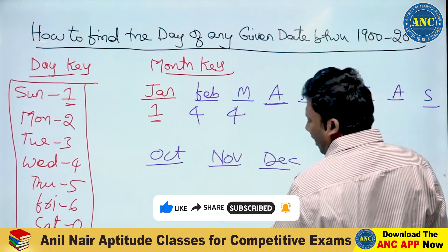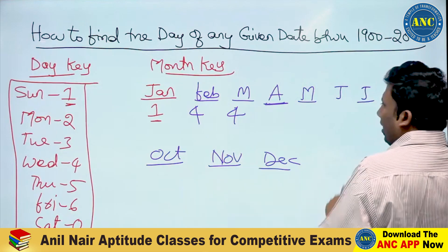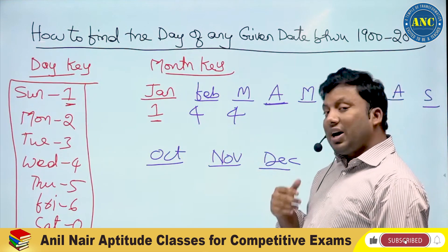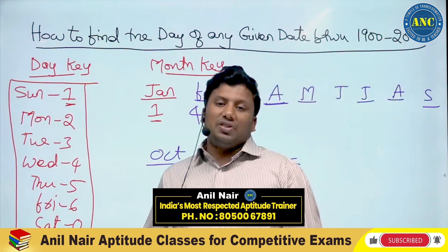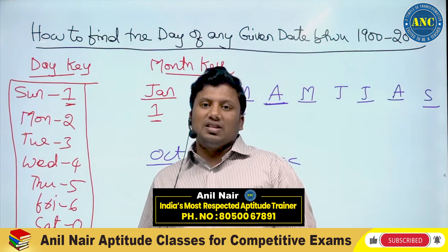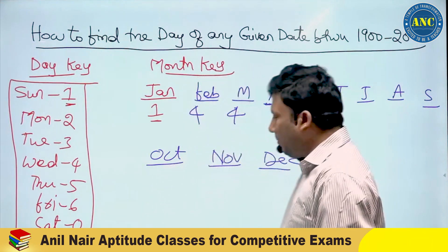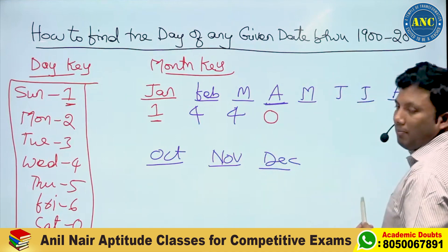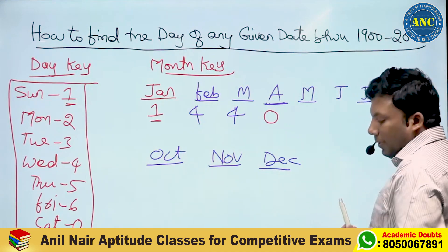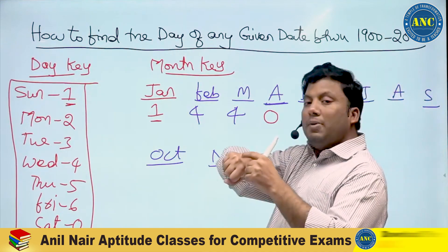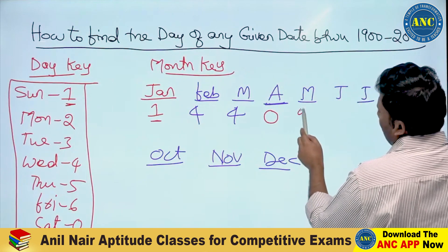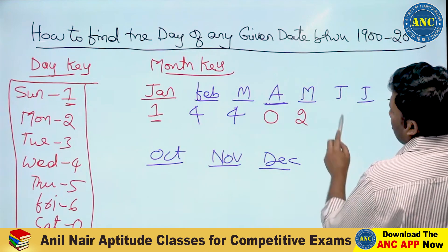I want the month key for April. March contains 31 days. 31 divided by 7: remainder 3. 4 plus 3 equals 7; 7 divided by 7 equals 0 — so April's month key is 0. For May: April contains 30 days. 30 divided by 7: remainder 2. 0 plus 2 equals 2 — May's month key is 2.